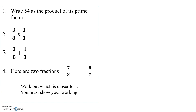Write 54 as the product of its prime factors. We've covered these before. Product means multiply. Prime means exactly two factors. And factor — a number that's divisible into another number, fits into another number. So we've got to write 54 as the product of its prime factors.